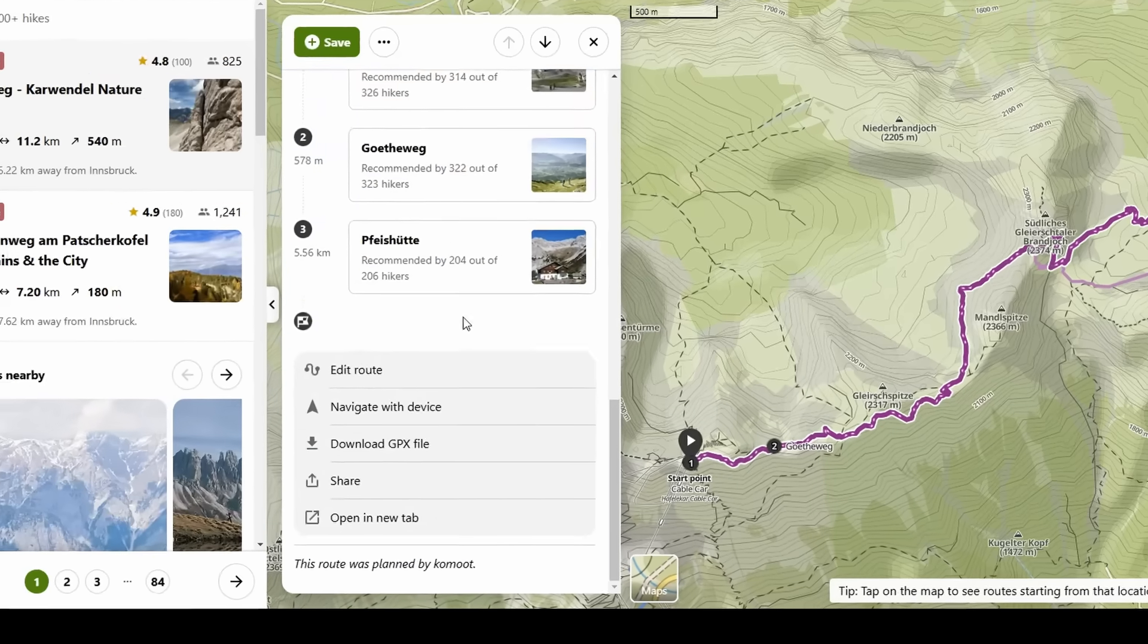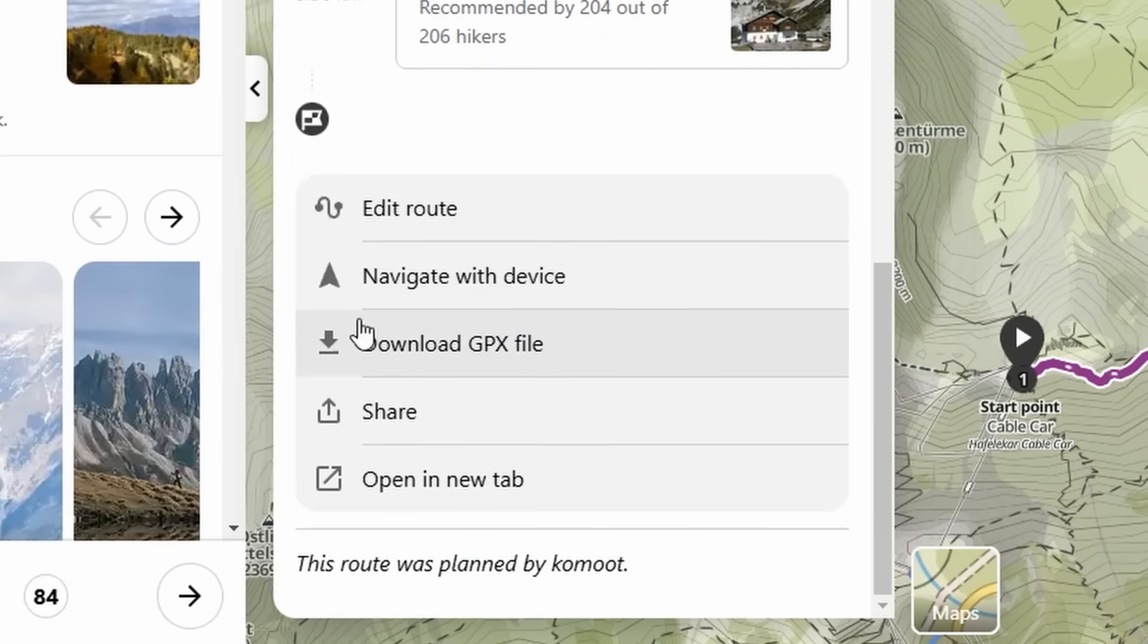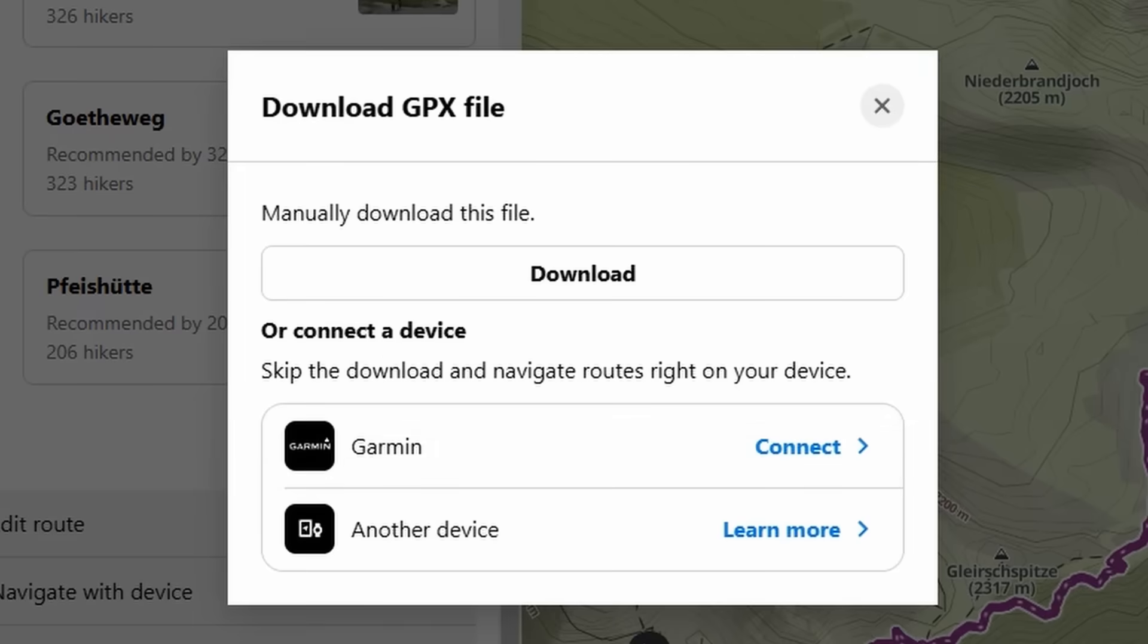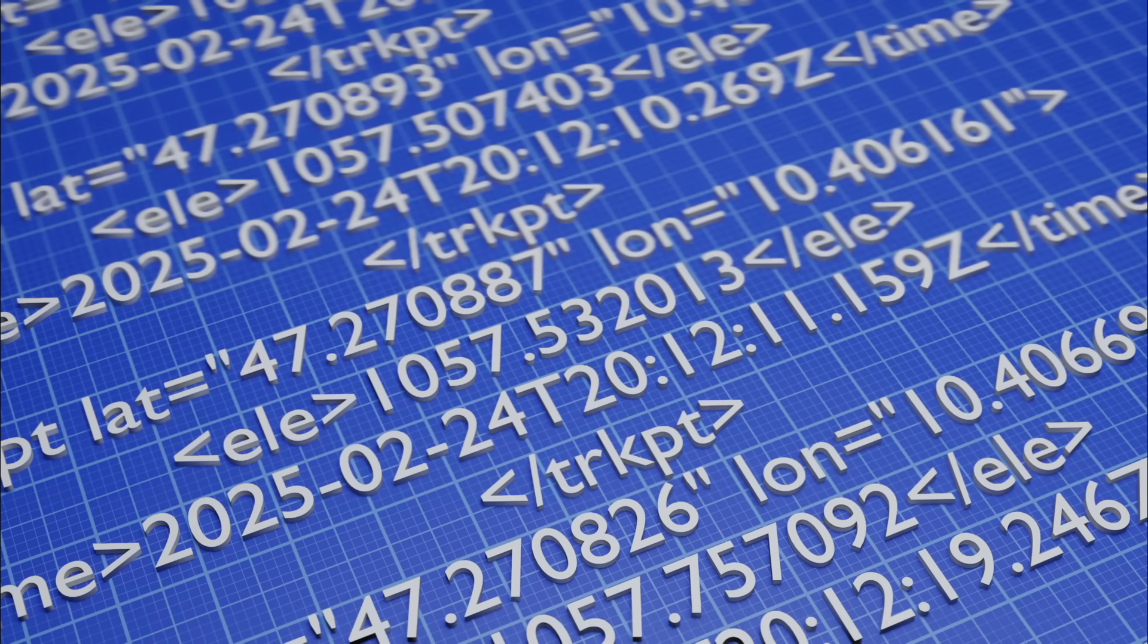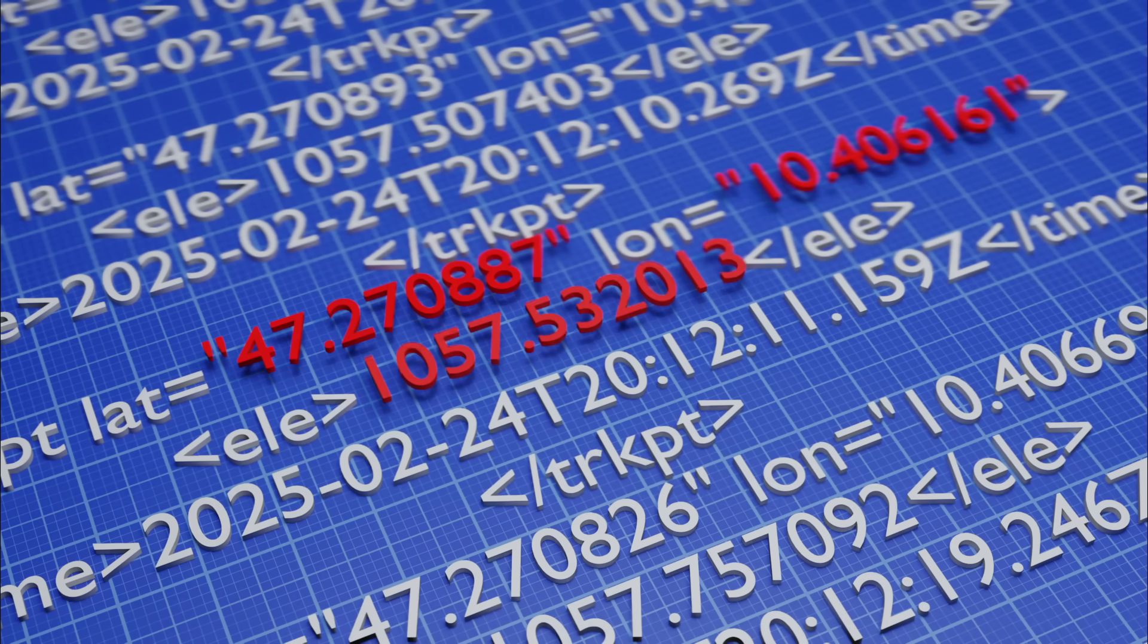First, let's take a closer look into GPX files. That's the file you can download from your tracking app, website, or device. It contains all the points of the path in the form of latitude, longitude, elevation, and time.